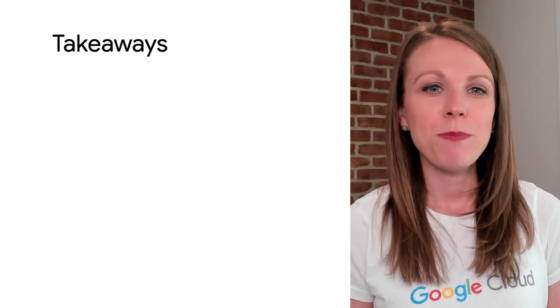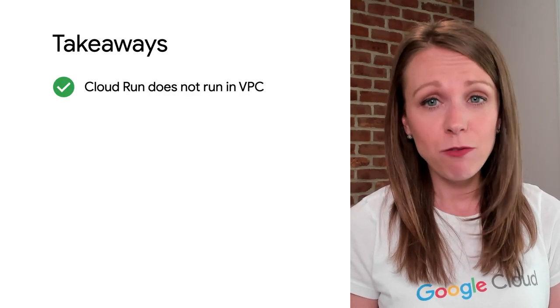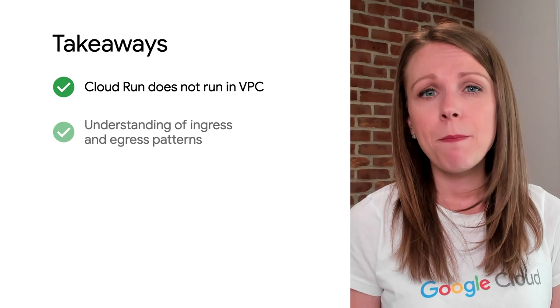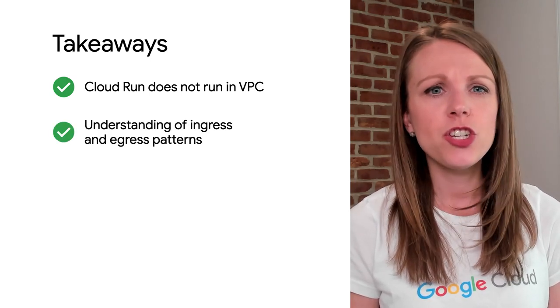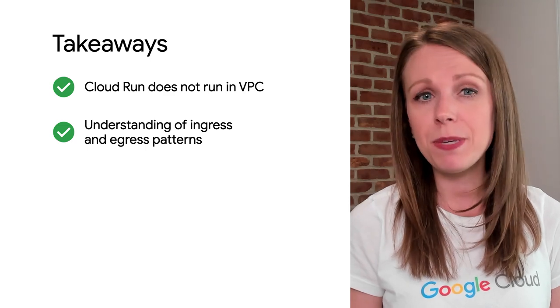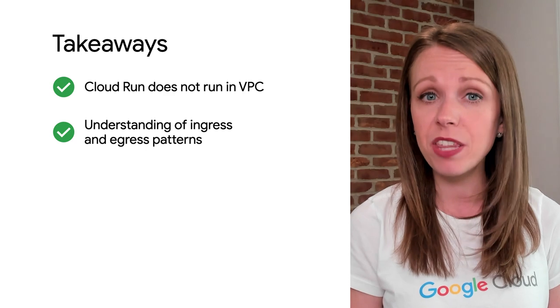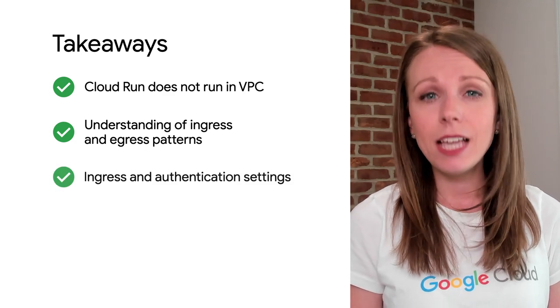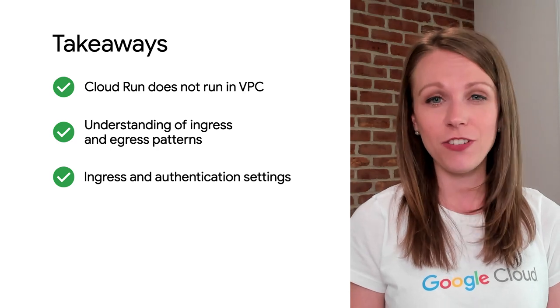To summarize the three most important takeaways: Cloud Run is serverless and does not run within a VPC. Make sure you fully understand the ingress and egress patterns of your service to know if you need to set up a serverless VPC access connector to connect to applications and services running within the VPC. Set the appropriate ingress control and authentication settings for the Cloud Run service. Thanks for watching, and look out for another video on the concepts of networking for Google Cloud's managed services.